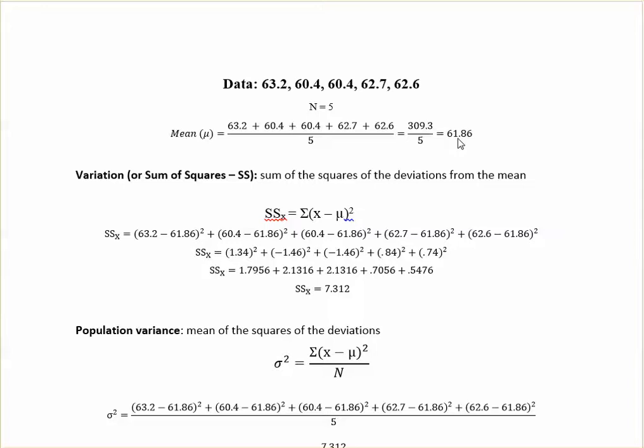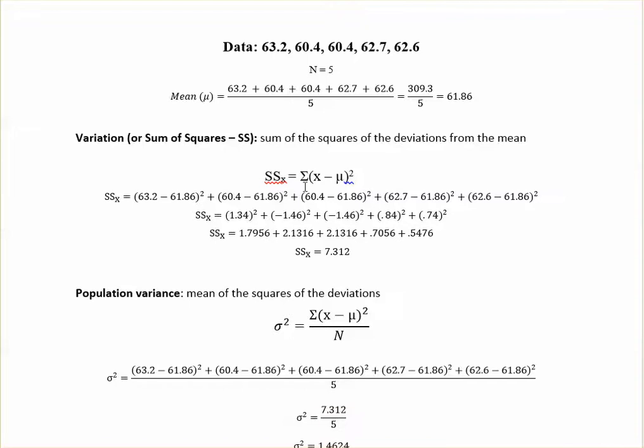So you're going to actually use this 61.86 when you come down to do your variation or your sum of squares. So your variation sum of squares. The sum of squares is the deviation from the mean. So in this case you're finding the sum, and that's what this right there stands for, is the sum of x, which each one of these is an x value. So 63.2, 60.4, those are all x values minus the μ, which is your mean, and then squared. So it's the sum of all of these squared.